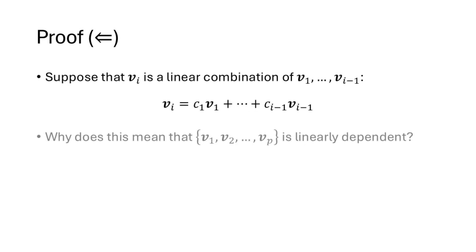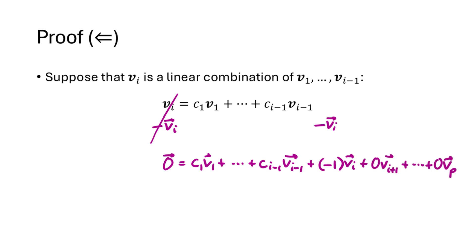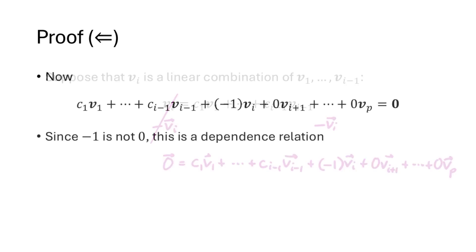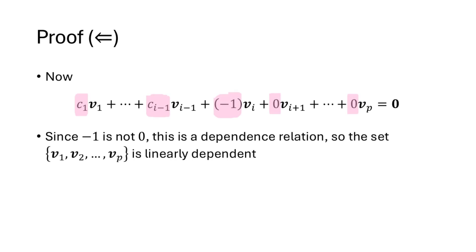Going in the other direction, suppose vi equals a linear combination of the vectors before it in the set. We subtract vi from both sides, giving us what looks like a dependence relation, but we're missing the vectors that come after vi. We can add those back in with zero weights. Since negative one is definitely not zero, this is a dependence relation, which means the set is linearly dependent.